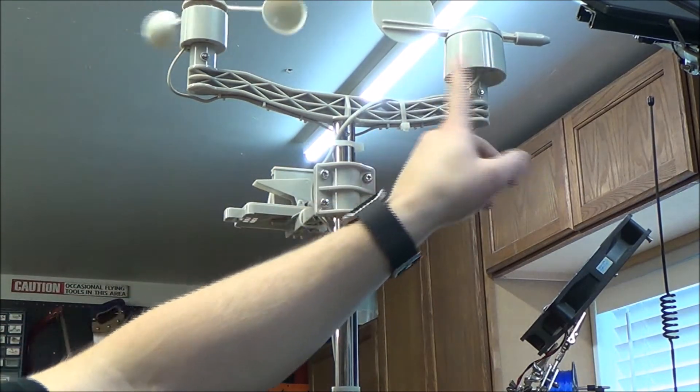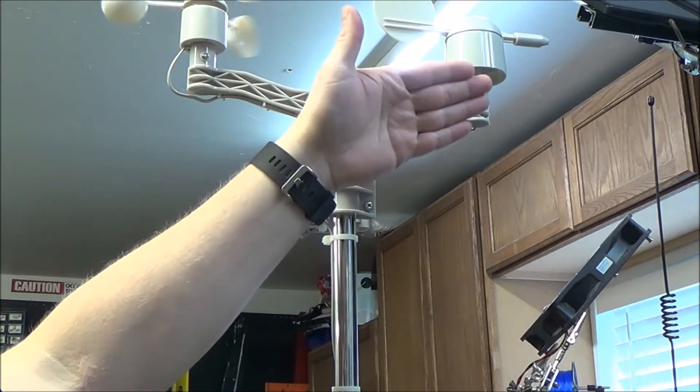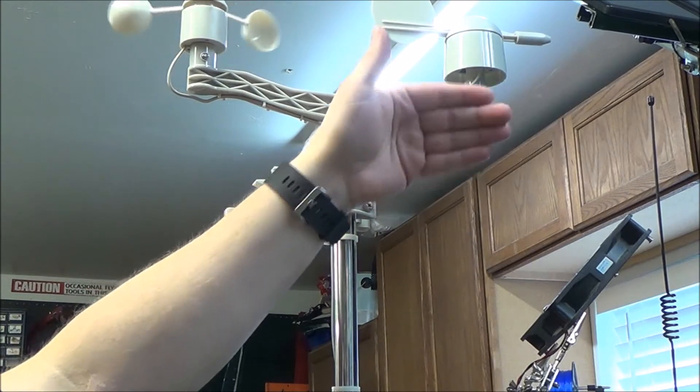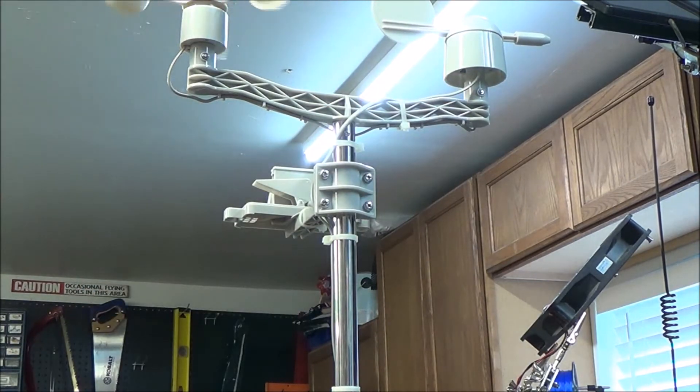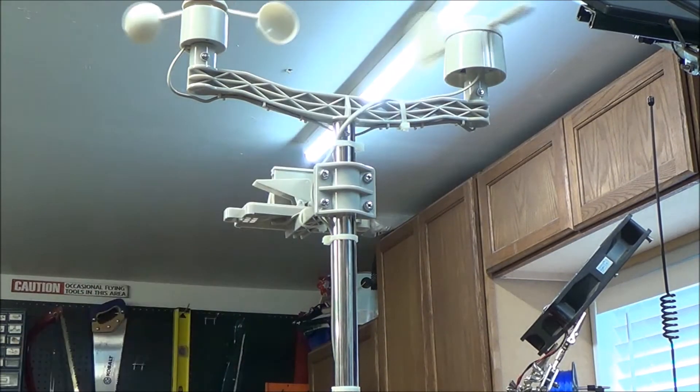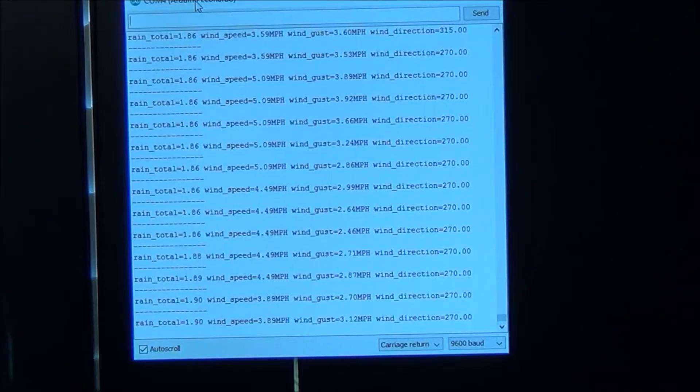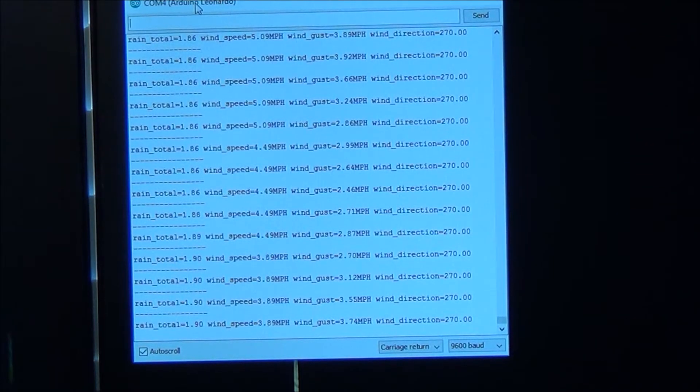This actually has a bunch of different resistors, so when it's facing a certain direction, the analog signal is a known value. And I'll show you that in a second. I'm going to reach over here and flop this little rain bucket back and forth. You can see that rain total goes up.